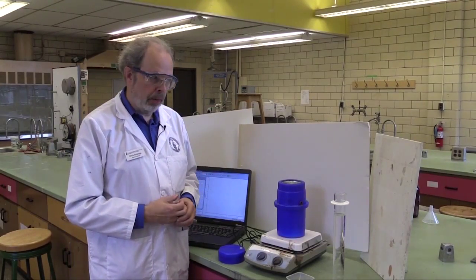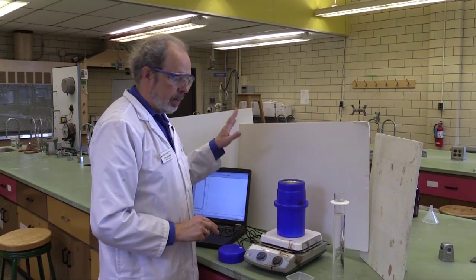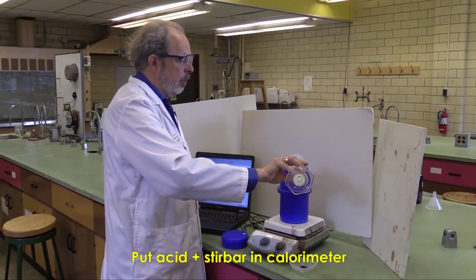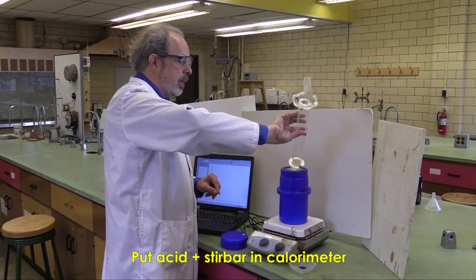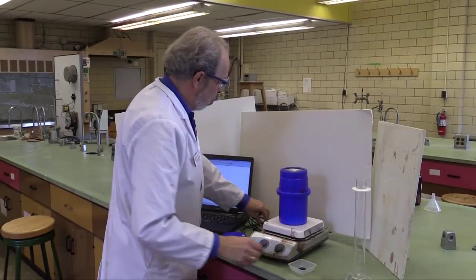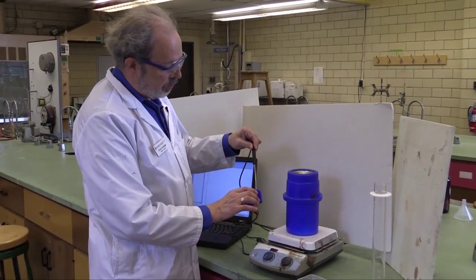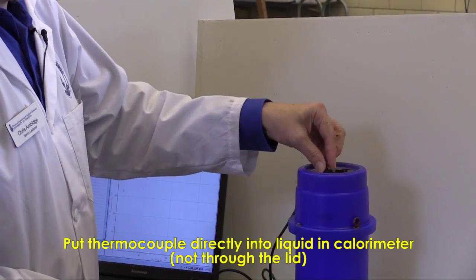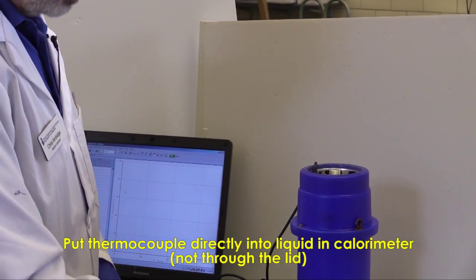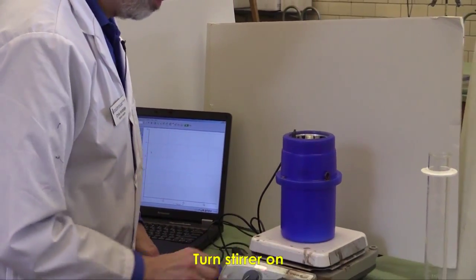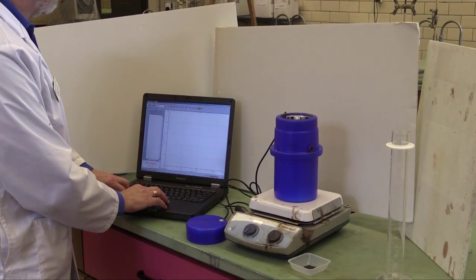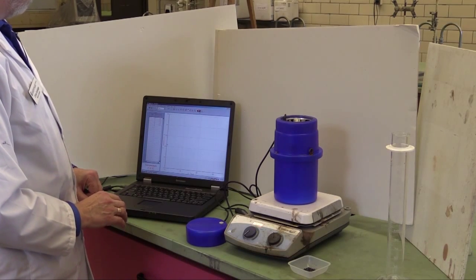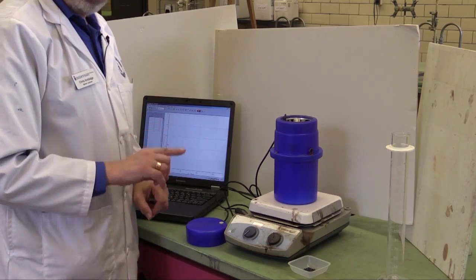We're back here now at the calorimeter. I've got the 250 ml of hydrochloric acid that I measured out earlier and the magnesium solid. The first thing to do is put all of the hydrochloric acid into the calorimeter. Now, it's at room temperature, so it won't be warming up. Here is the thermocouple. Now, if I put it through the hole in the lid, it's too short. It won't actually reach the hydrochloric acid. So I just put it directly into the dewar flask. Turn the stirrer on, so I've got motion happening there. And at this point, we can start collecting. Click on the green button.